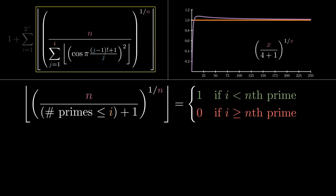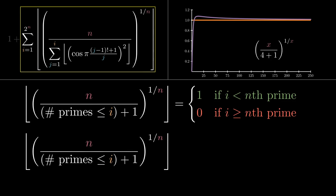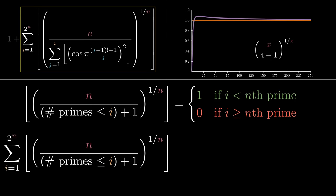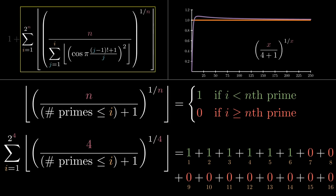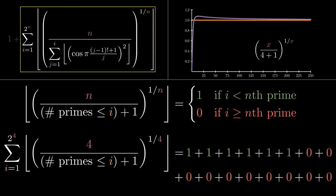And from here, it's smooth sailing. The final step, well, almost final, is to sum over all i from 1 to 2 to the n. Again let's look at an example. If n is 4, we're letting i go from 1 to 16. For each value of i less than the 4th prime, we get a 1. So overall, we end up with 6, which is 1 less than the 4th prime.